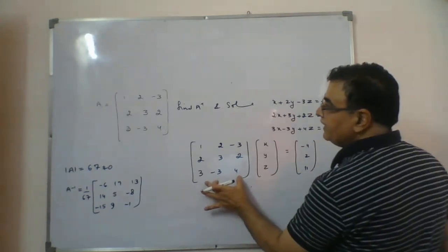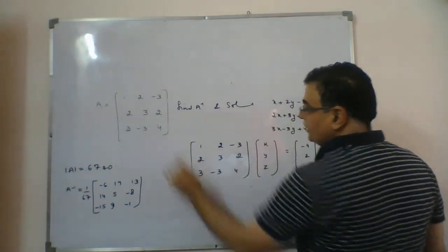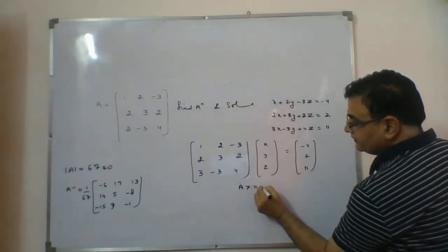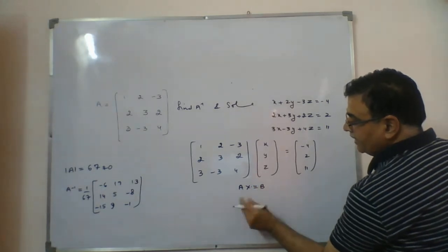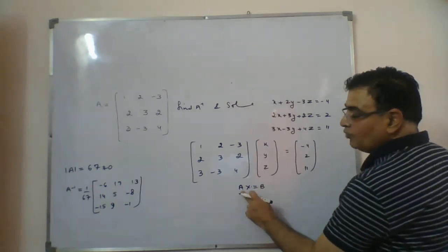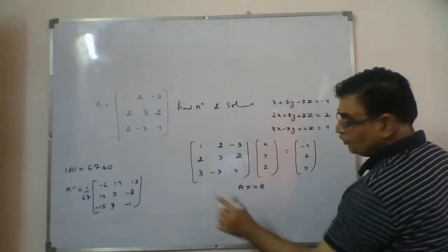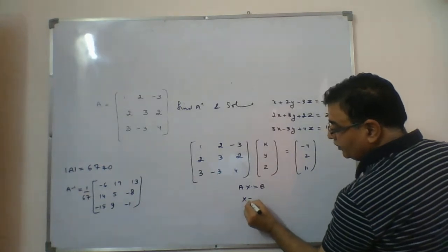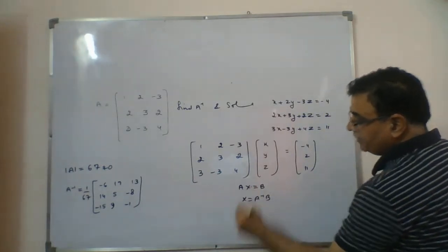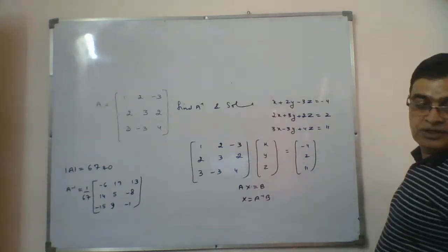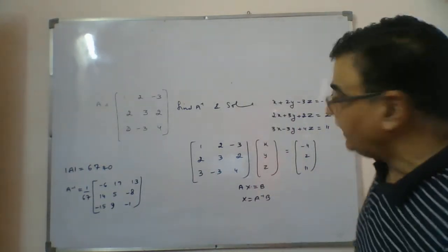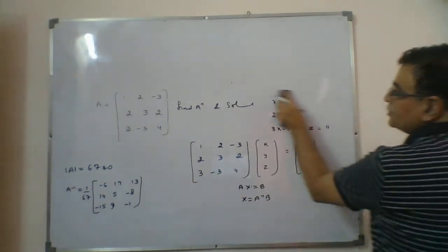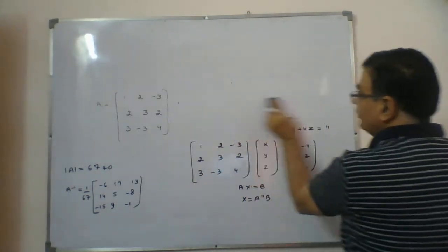The variable vector is x, y, z and the right-hand side B is -4, 2, and a. This coefficient matrix is A, so we write A·x = B. Since the inverse of A already exists, we can solve as x = A⁻¹·B, and A inverse is already known, so we just go ahead and solve it.